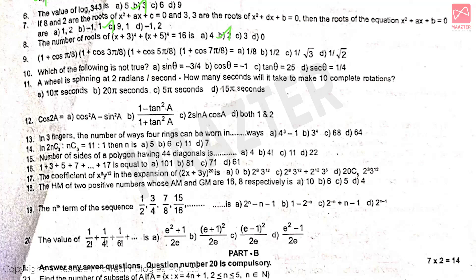1 + cos(π/8) into 1 + cos(3π/8) into 1 + cos(5π/8) into 1 + cos(7π/8) equals answer option A. Which of the following is not true? Answer is option D. A wheel is spinning at 2 radians per second; how many seconds will it take to make 10 complete rotations? Answer option A. cos 2A equals answer option D, both 1 and 2. In 3 fingers, the number of ways 4 rings can be worn is answer option D.